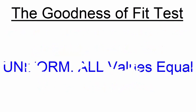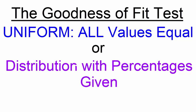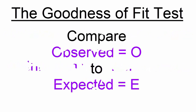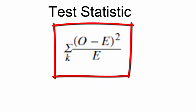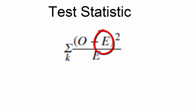The distribution may be a uniform distribution — in other words, all of the events have an equal likelihood or probability — or the distribution may be one where particular percentages are given. In either case, we compare the expected number for particular events to the actual numbers observed. The test statistic is the summation for k different events of the observed number minus the expected number, that quantity squared, divided by the expected number.